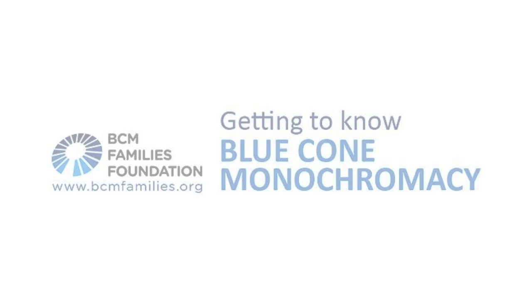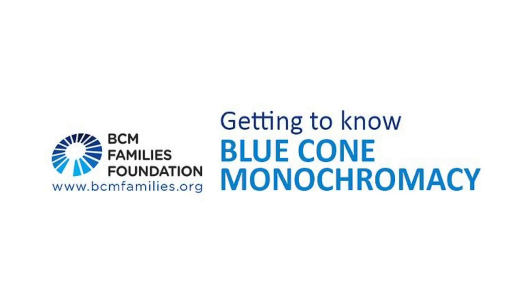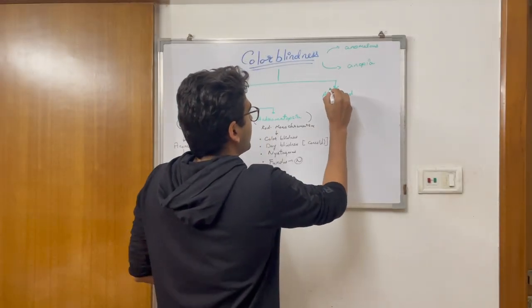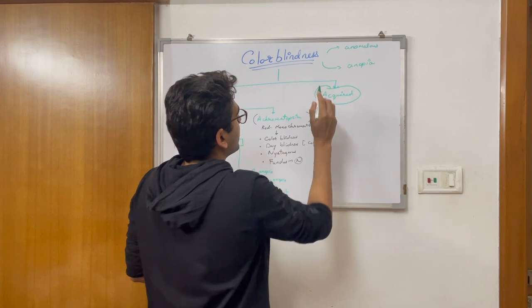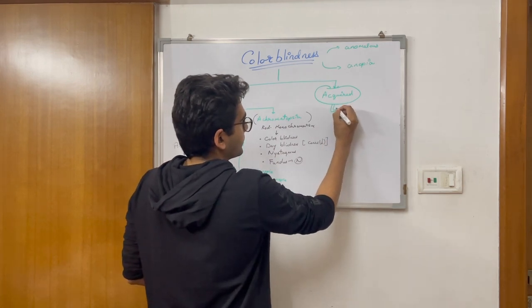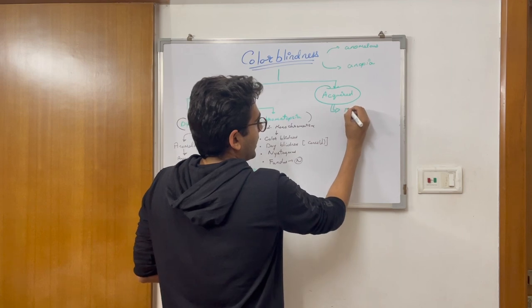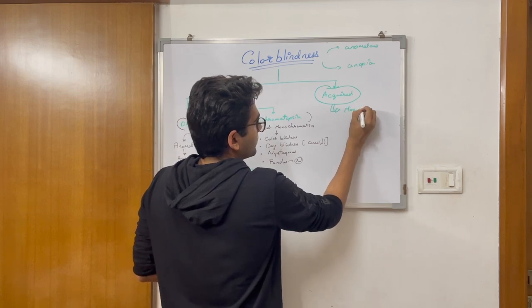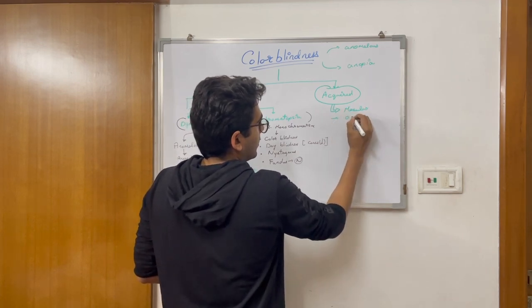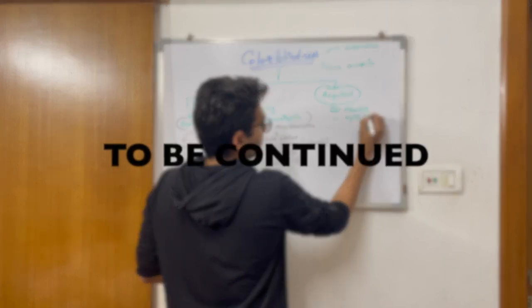Another special case of dischromatopsia is blue cone monochromatism. It is a condition of complete absence of red and green cone function. And lastly, we will be talking about the acquired condition for color blindness. Acquired color blindness is caused by macular or optic nerve lesions.